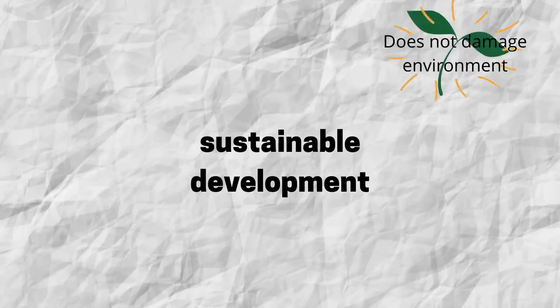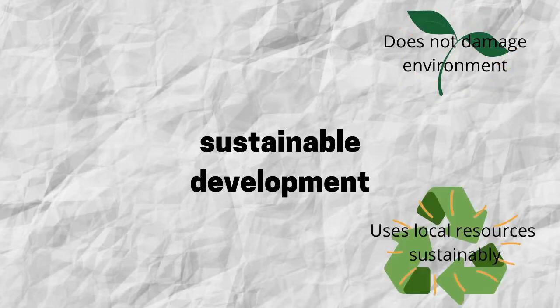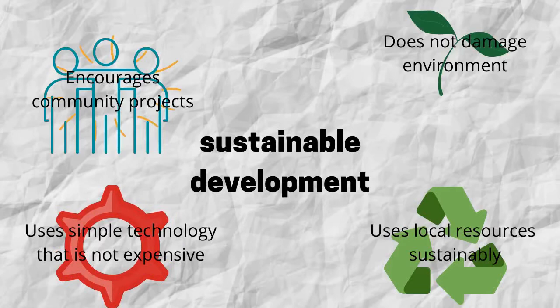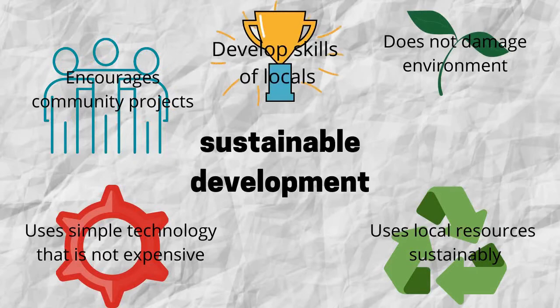Some key points about sustainable development: it does not damage the environment; it needs to use local resources in a sustainable way without depleting them for future generations; it aims to use simple technology that is not expensive to run; and it encourages community projects, which connects it to alternative development. It also strives to develop the skills of local people. All of this contributes to the well-being of people as well as the well-being of the environment for future generations. And that is it for conventional, sustainable, and alternative development.